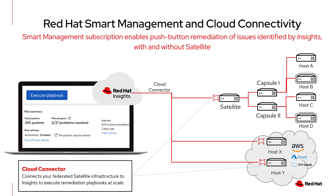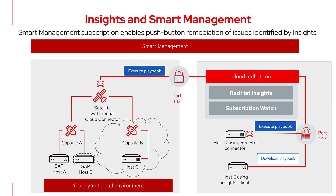In a more complex environment, you might have a production environment that leverages Satellite and a developer environment, or a small agile group that doesn't have a satellite. All the systems can now be connected with Cloud Connector to enable push-button remediation. Together, Insights and Smart Management work like this: with Satellite, all the data is automatically proxied through the satellite without any manual configuration. Configuring Cloud Connector enables the Execute Remediate button inside the Insights Remediation service.